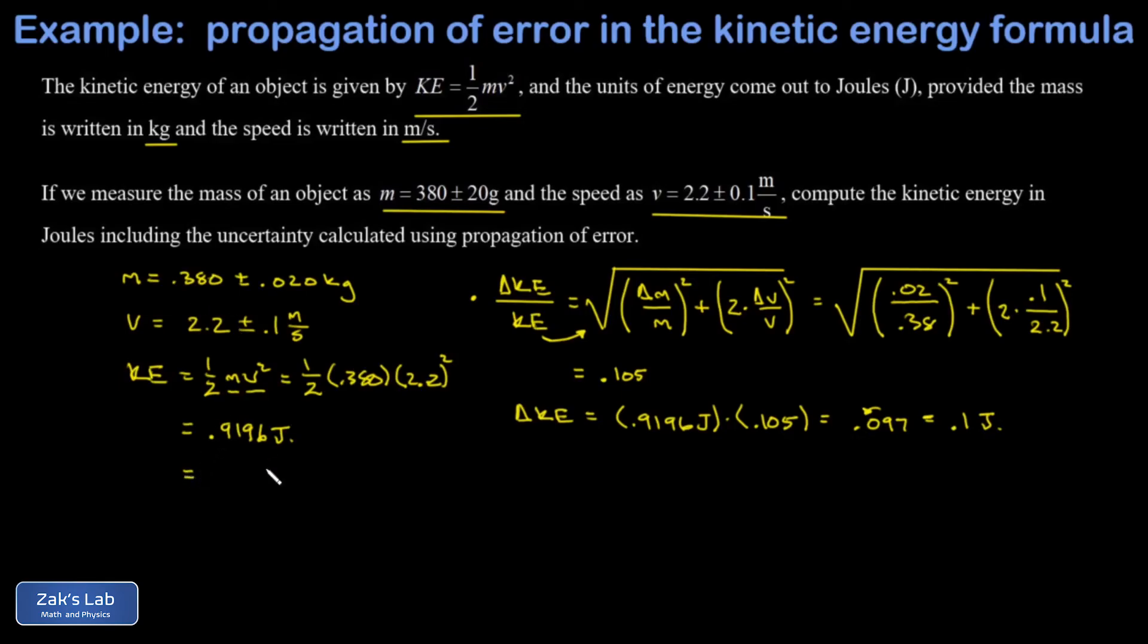Next, we're going to round the actual calculated quantity—the kinetic energy. We're going to round it to the same decimal place as where the uncertainty appears, and that's the tenths place. The reasoning is, if there's uncertainty in the tenths place, there's no reason to say what's going on in the hundredths place, thousandths place, and so on.